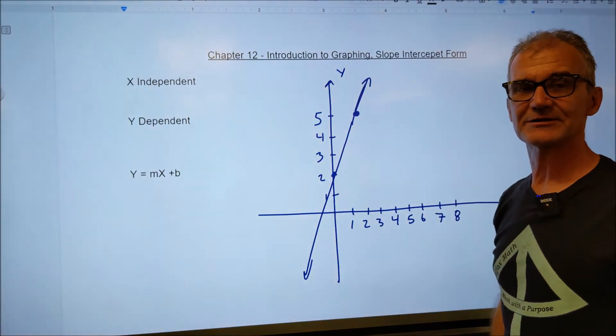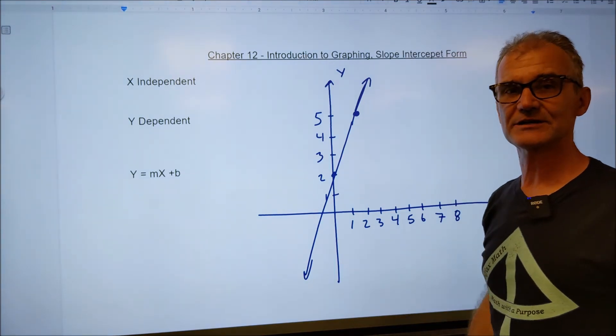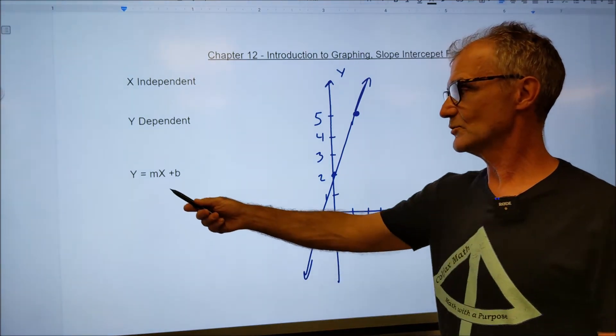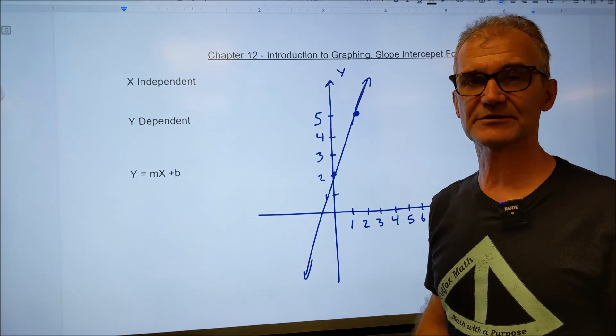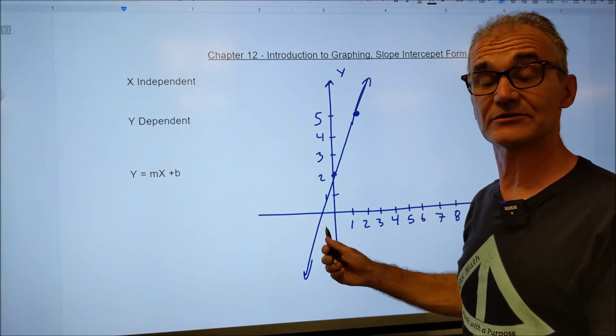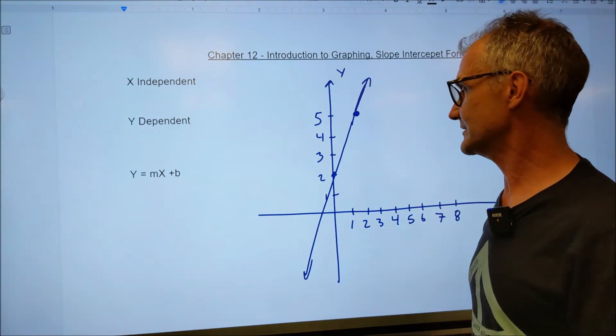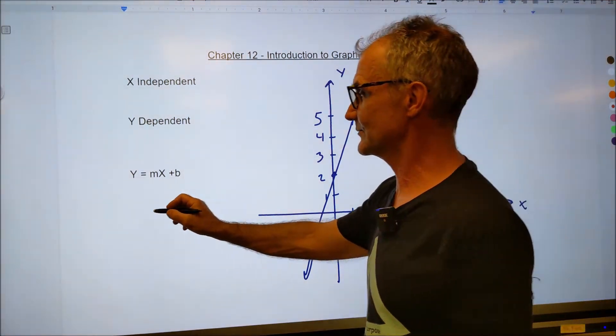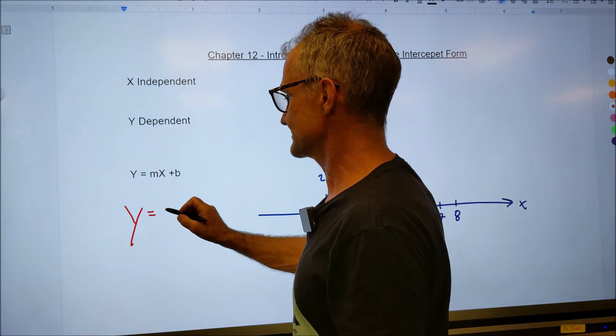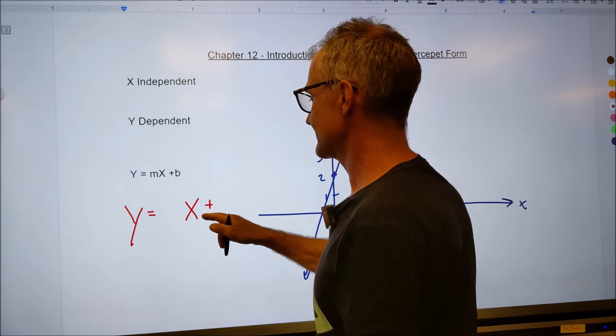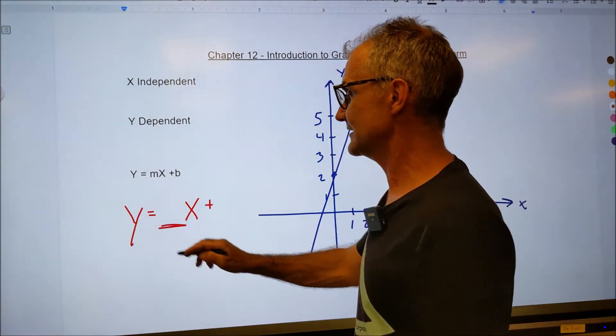Okay, here's another graph. Why don't you go ahead and pause the video and see if you can find the equation of this line. You want it in the y equals mx plus b form, meaning you got to find the slope of this line and the y-intercept. All right, so we want y equals m, which is our slope, x plus b.